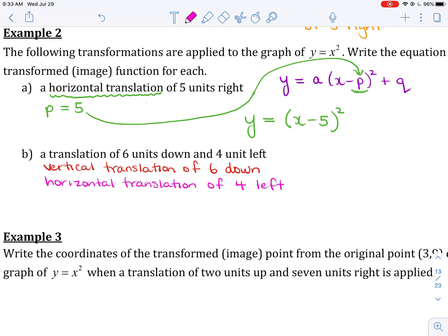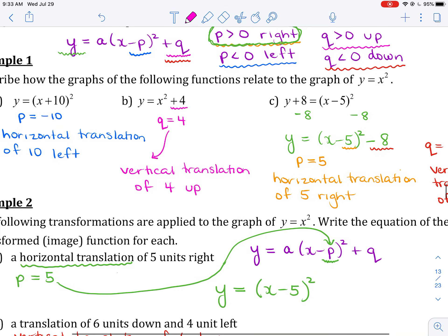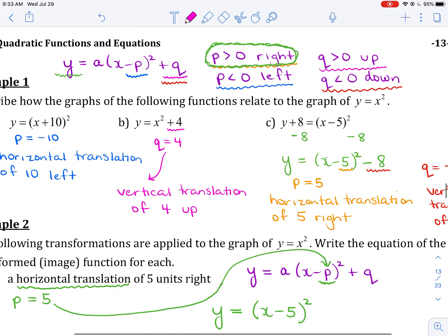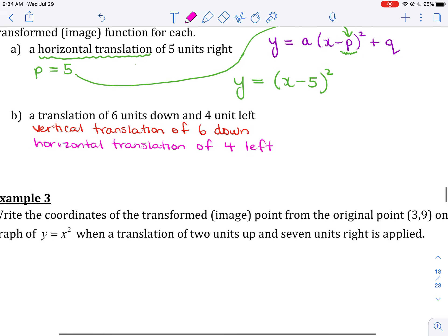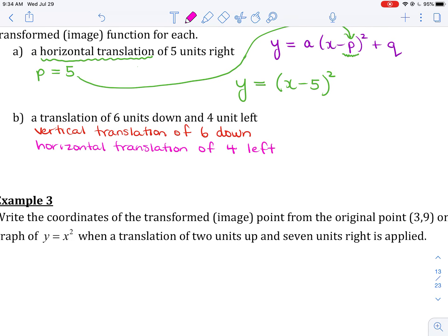Let's start with the horizontal translation of 4 units to the left, because we've just finished in A talking about a horizontal translation. We know that it's our P value that causes the horizontal translation. And if I want to go to the left, I need my P value to be less than 0. So going 4 to the left means I need P to be negative 4.